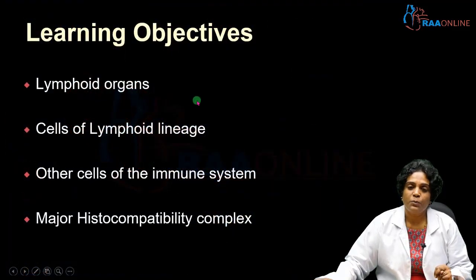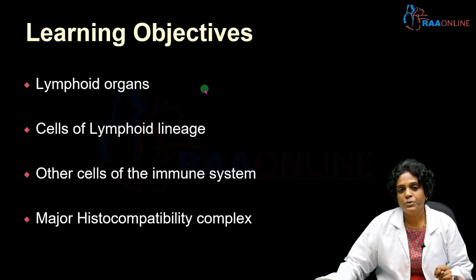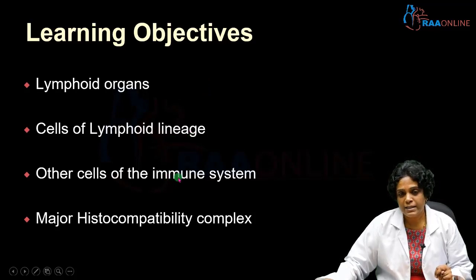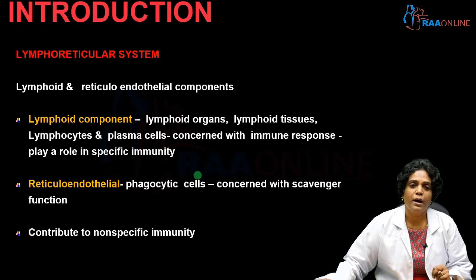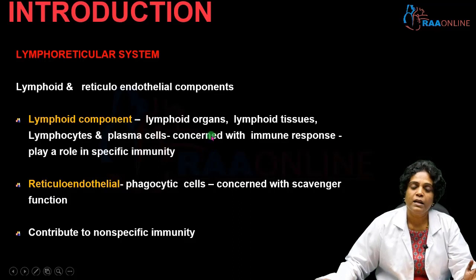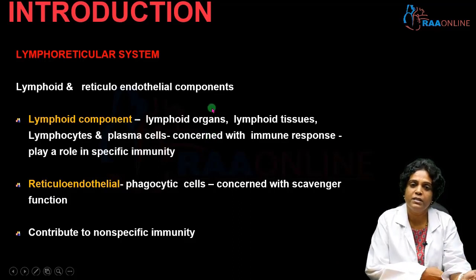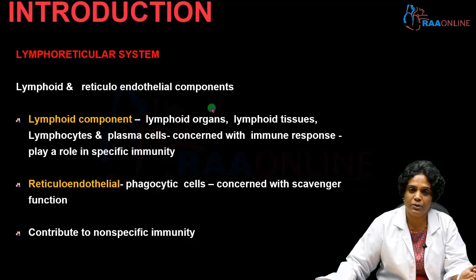We'll be looking into the various lymphoid organs that participate in the immune response, the various immune cells of the lymphoid lineage and other cells of the immune system, and also the major histocompatibility complex and its typing methods. So what is the lymphoreticular system? It encompasses two components: one is the lymphoid component, and the other one is the reticuloendothelial component.